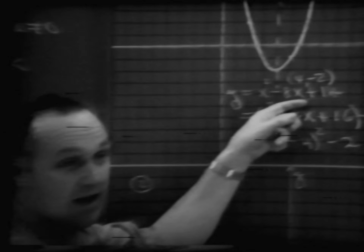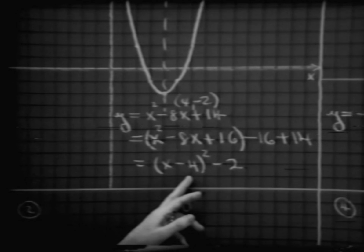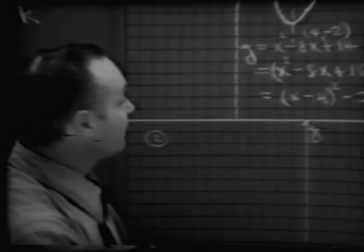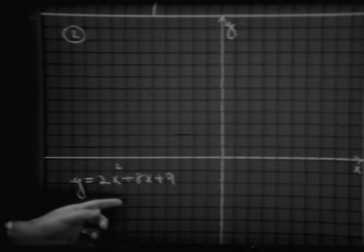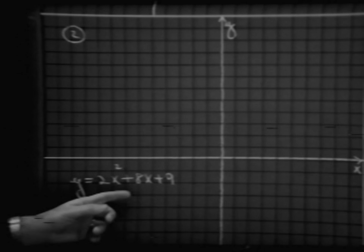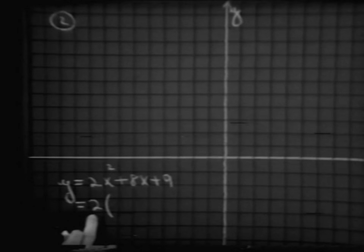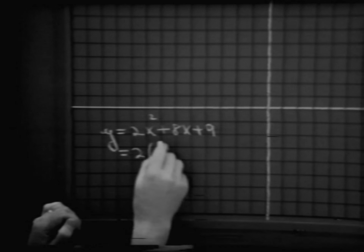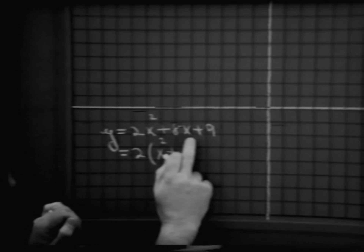If you were to try to graph that, you'd simply want to plot a lot of points. But if you get it into this completed square form, in fact it falls out very nicely. Let's look at another example. Here we have y equal to 2x squared plus 8x plus 9. In this case, let's think in terms of factoring out that number 2, which is the number A in our general case. And if we were to do so, we'd have left x squared plus — 2 times what number is 8x? 4x.